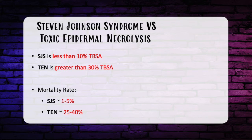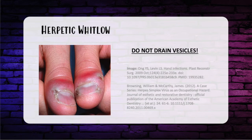What separates the two diagnoses? Steven Johnson Syndrome is a milder form of TEN, differentiated by the amount of total body surface area affected. With Steven Johnson Syndrome, it's less than 10% TBSA. With TEN, it's greater than 30%. That 10–30% range is a gray zone. As expected, Steven Johnson has less mortality — about 1–5% — versus TEN at 25–40%.